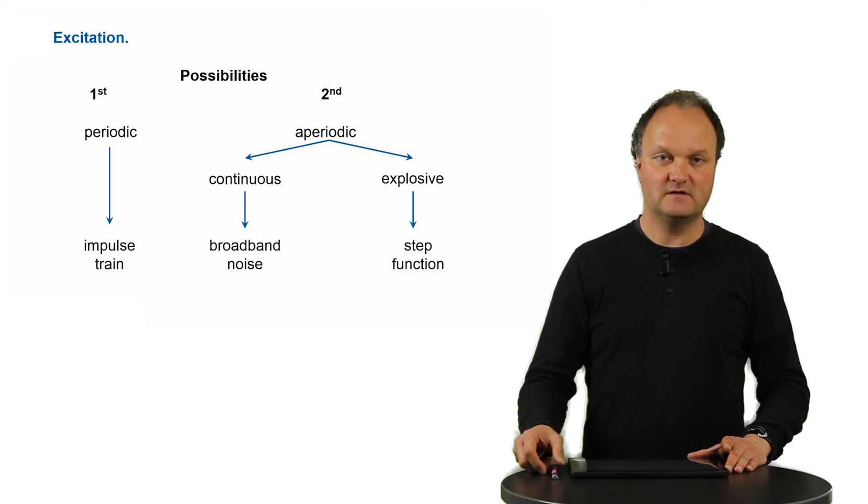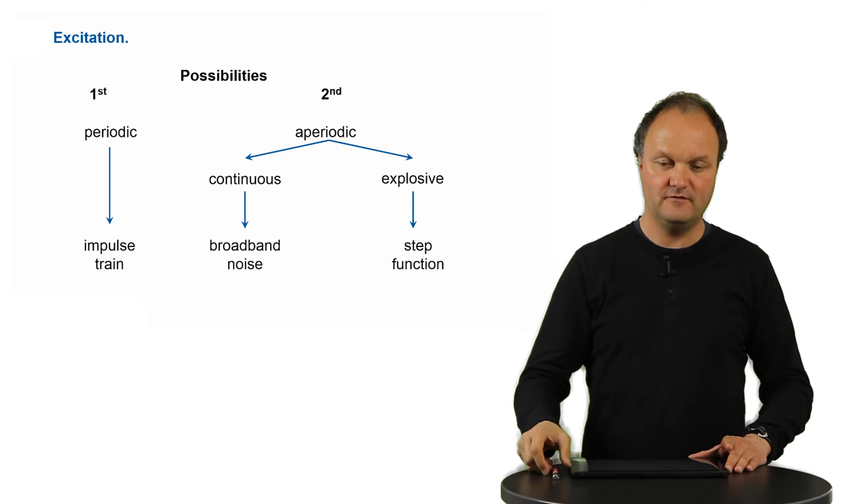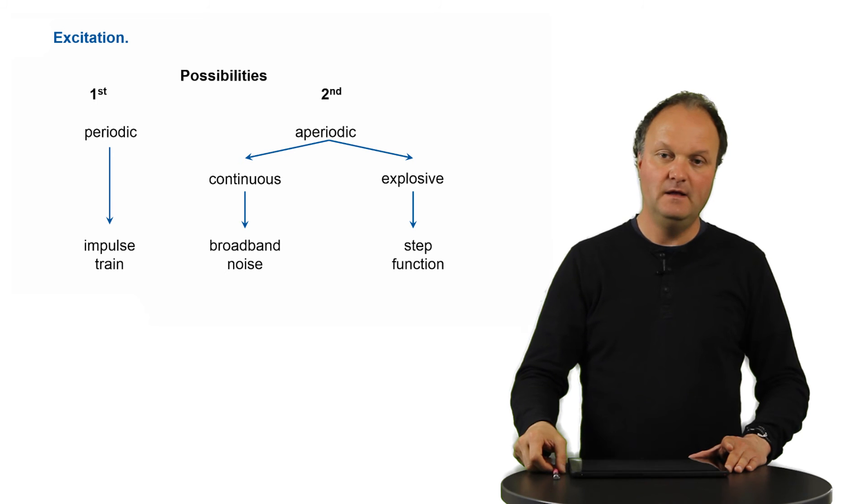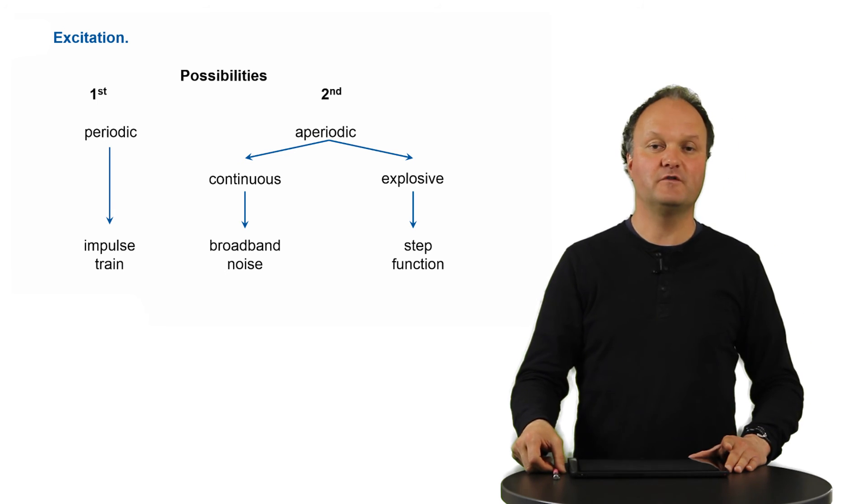These are called the fricatives. For example, a th sound or a s sound where you can really feel that it happens close to the tip of your tongue, or a sh sound where it happens a little bit further inside. This continuous excitation signal corresponds to a broadband noise. That is, it also contains many frequencies in it.